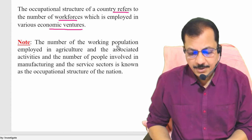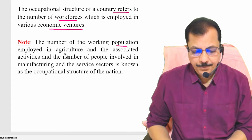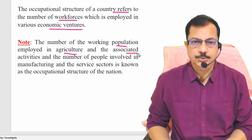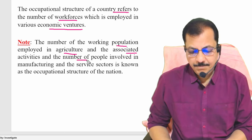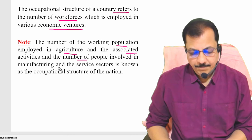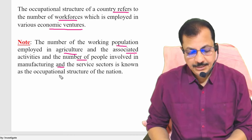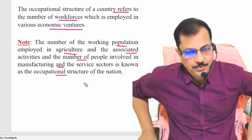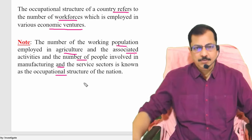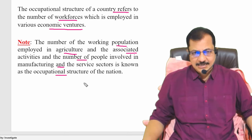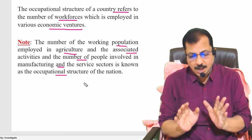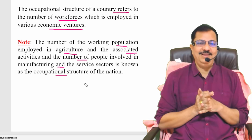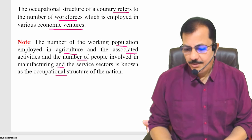The number of working population employed in agriculture and associated activities, and the number of people involved in manufacturing and servicing sectors, is known as the occupational structure of the nation — how many people are working in agriculture, how many are in manufacturing and services.